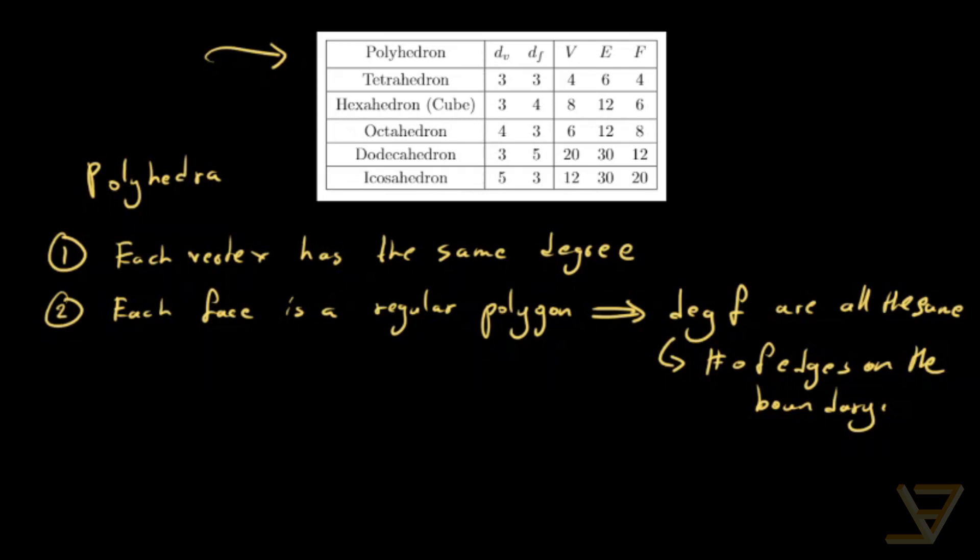So if you look at this table, we have dv and df. So this degree, I'm going to call dv, and this degree, I'm going to call df.